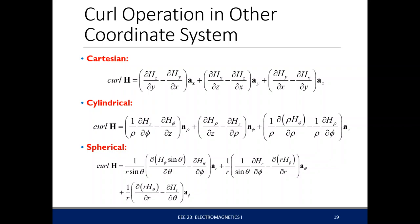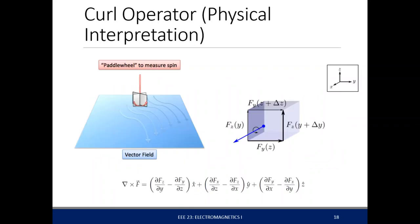The last topic we discussed in the first part is the curl operation. The curl is actually a measure of how much spin the vector field has at a certain point. It's something like having a very small paddle wheel on a river, and you measure how much the paddle wheel spins — and you're already measuring the curl of the water current at that point.